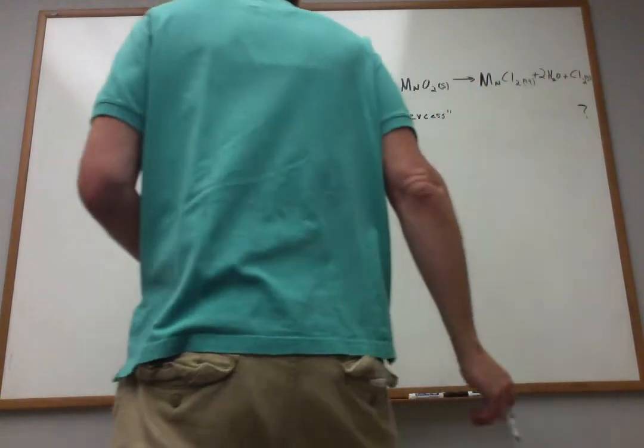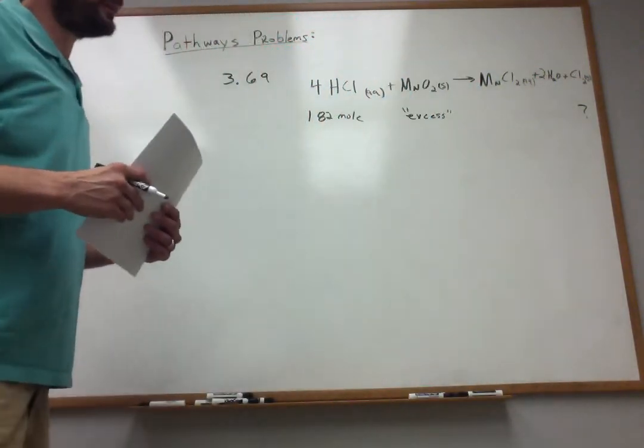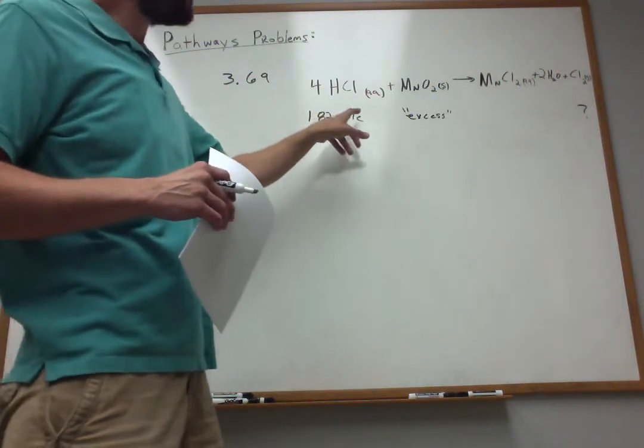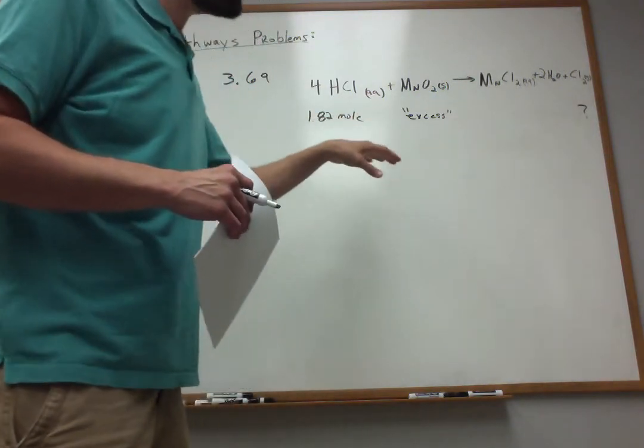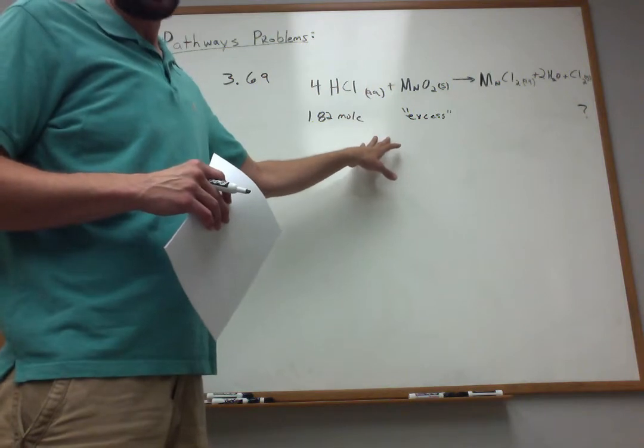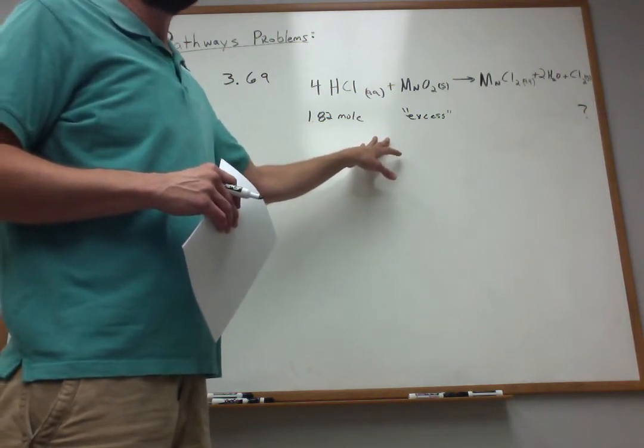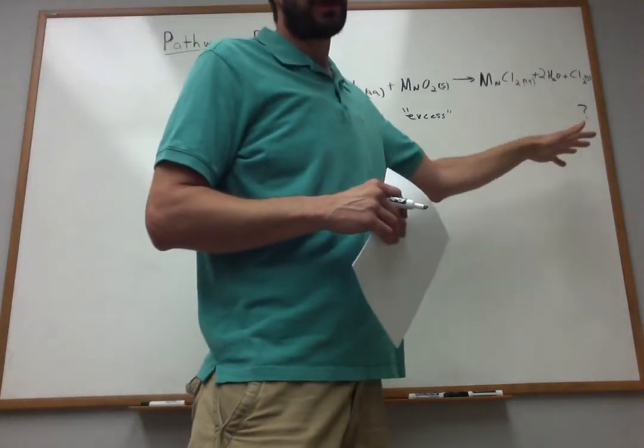So this basically is just a stoichiometry problem. All chemical reactions combine reactants. Here there's two reactants to make three products. The amount of the reactants that you use or you have available for use determines how much product can be made.